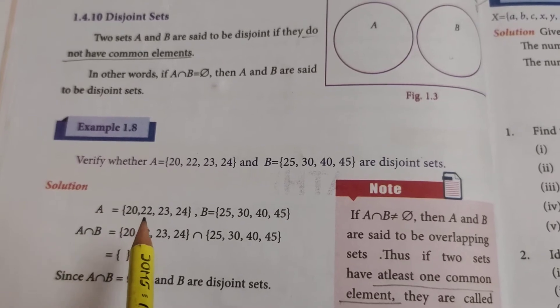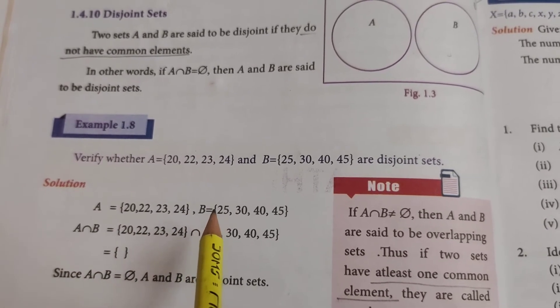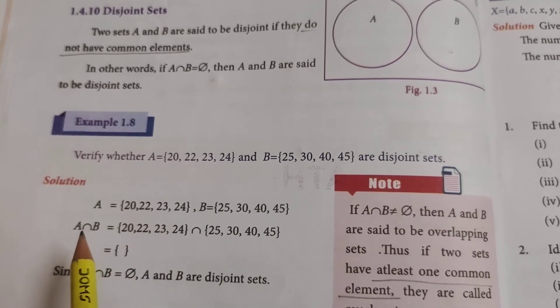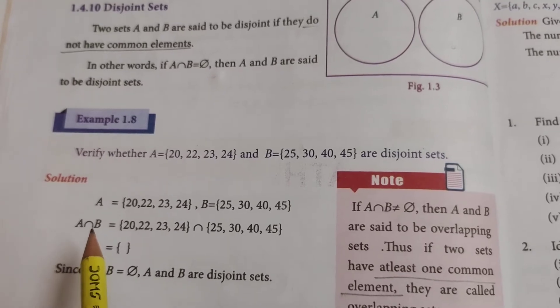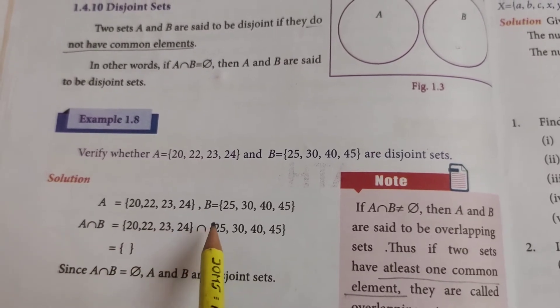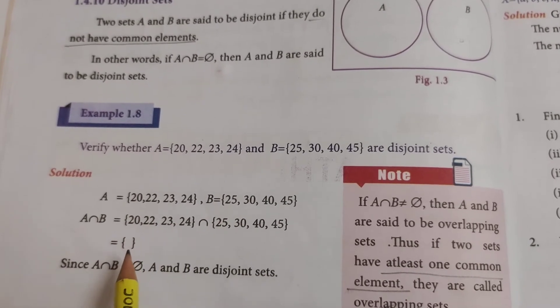First, we have to find the common element. Is there any? No. So A intersection B equals—write the first set, put the intersection symbol, and write the second set. Is there any common element? No. So how to write? The null set.